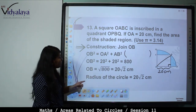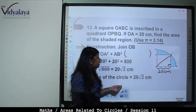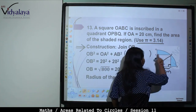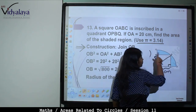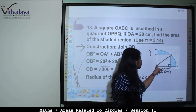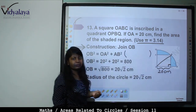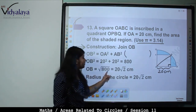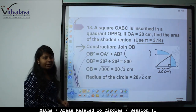Radius of the circle = OB, because when a square is inscribed in a quadrant, the diagonal of the square equals the radius of the circle. So radius = 20√2 cm.